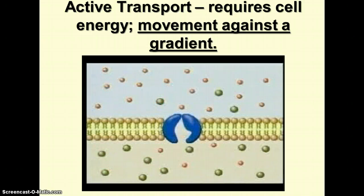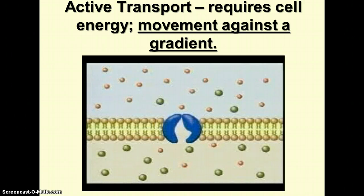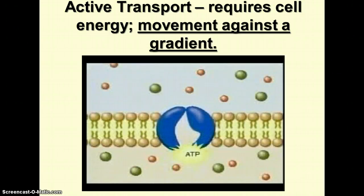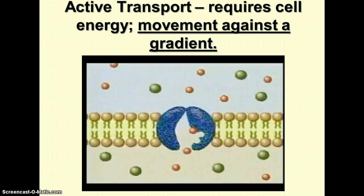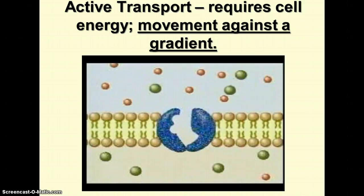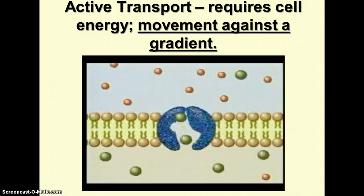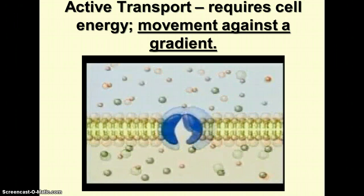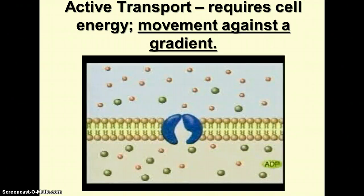Cells must also pump molecules against a concentration gradient. Ions such as sodium and potassium are moved in this way. A special carrier protein — the sodium-potassium pump — is involved. ATP transfers energy to the carrier protein, causing it to change shape so that sodium ions readily bind to it. The binding of sodium causes another shape change and the sodium ions are released outside the cell. The protein can then bind potassium ions, changes shape again, and the potassium ions are released inside the cell. At this point, the energy from ATP has been used up, and the sodium-potassium pump needs energy from another ATP to repeat the cycle.